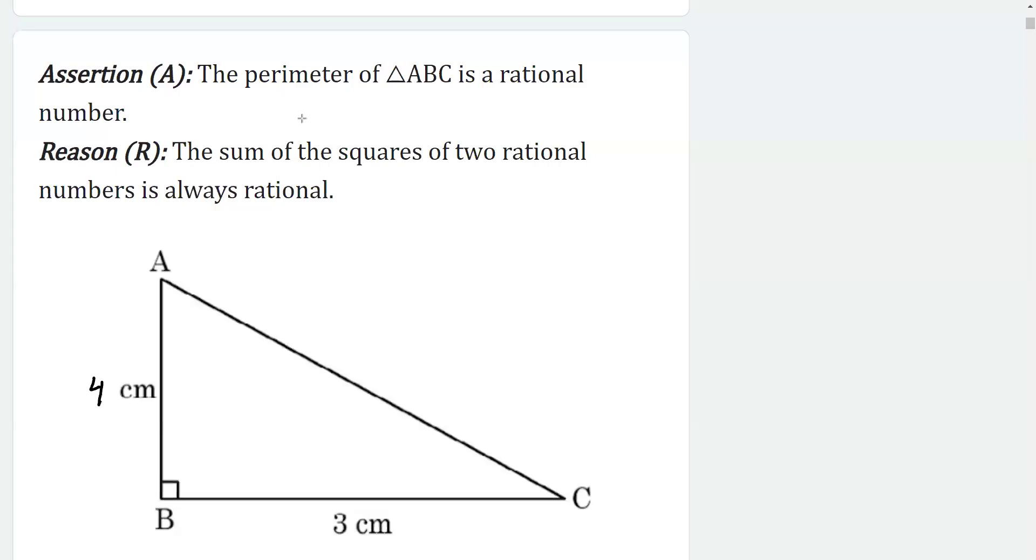In this assertion-reason based question, the assertion says that the perimeter of triangle ABC is a rational number. You know that perimeter of a triangle is the sum of the lengths of three sides.